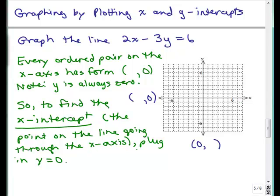The x intercept means where does the line cross or go through the x axis. We're going to plug in y equals 0. So, we have this equation to get the x intercept of 2x minus 3y equals 6, let y equals 0.